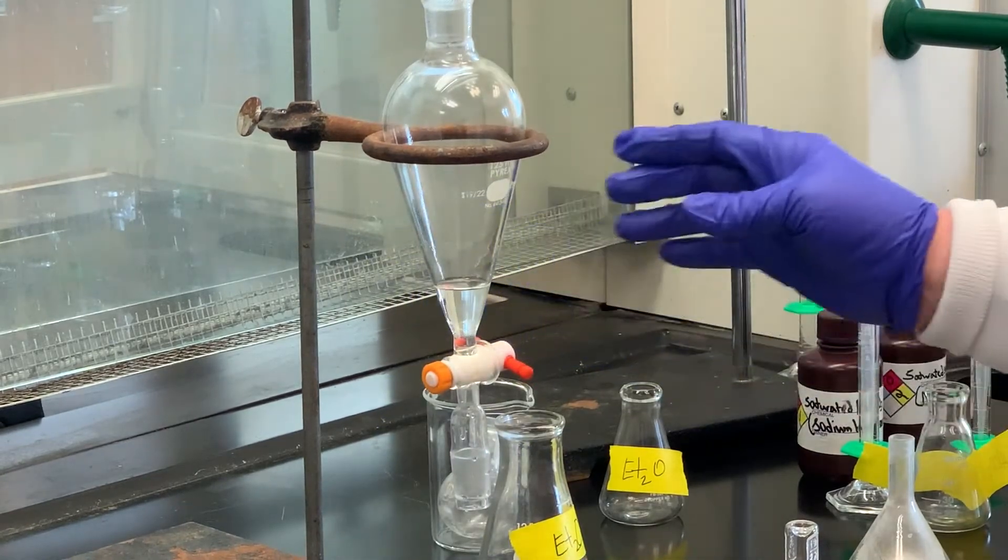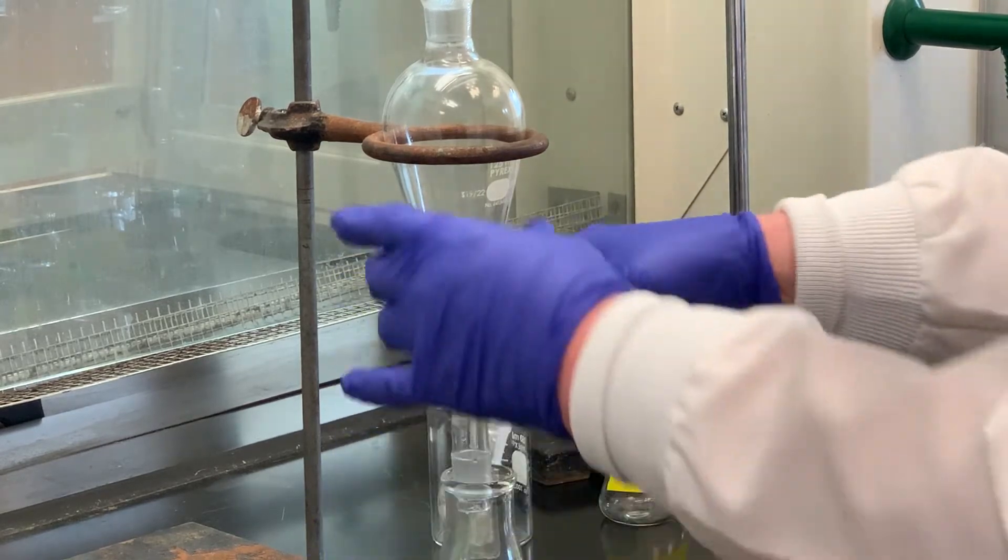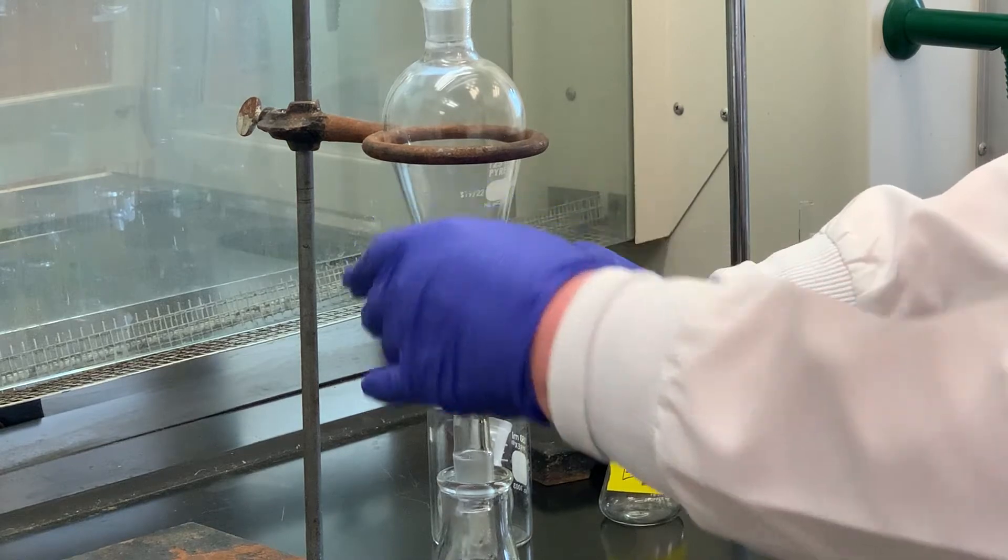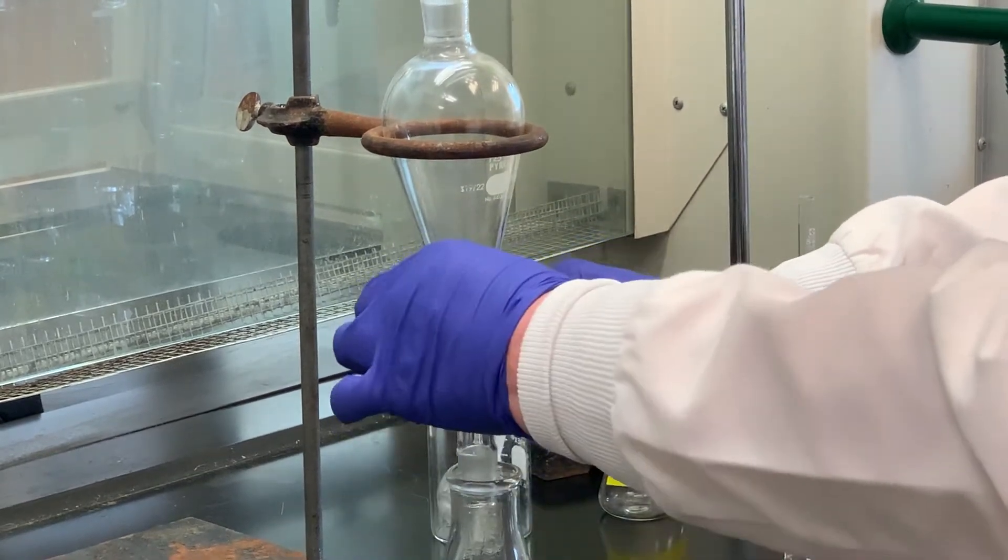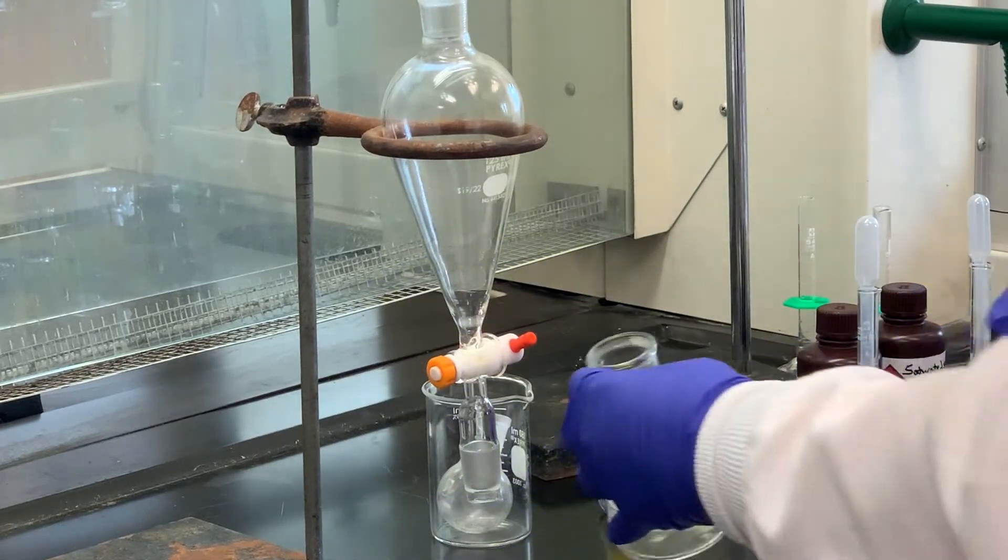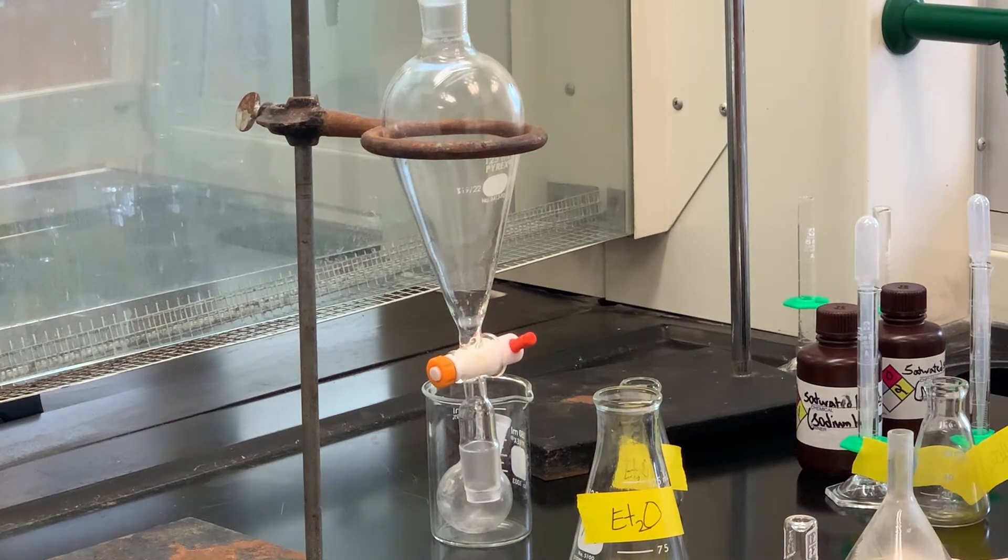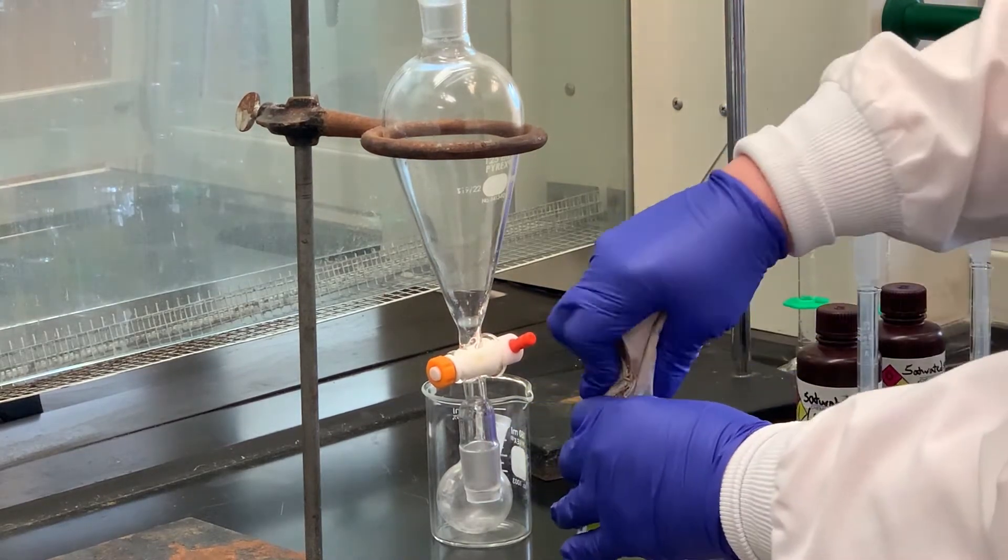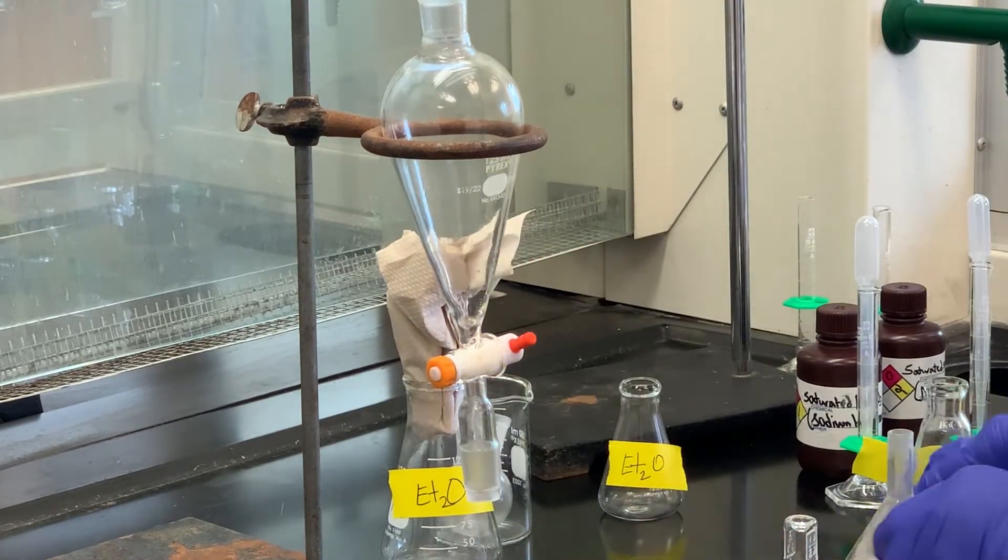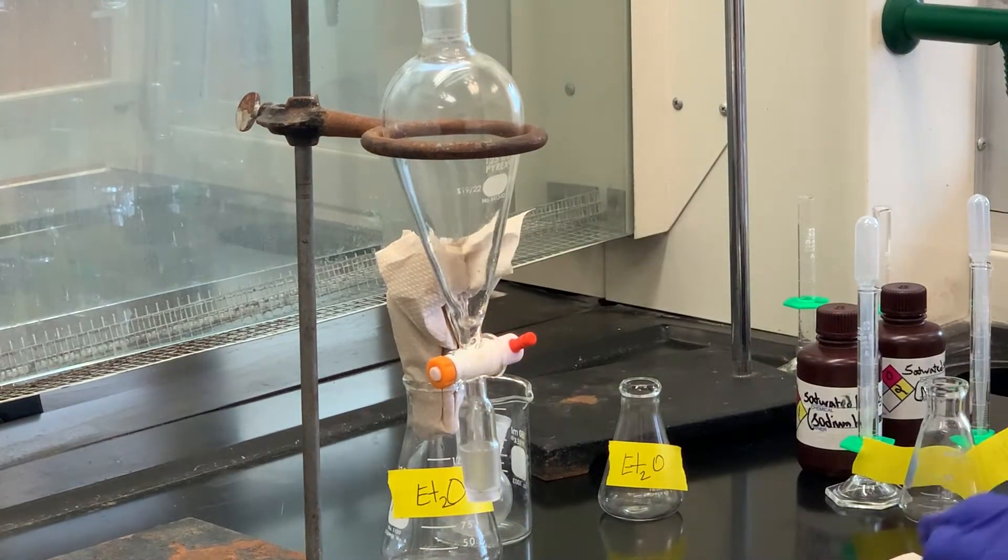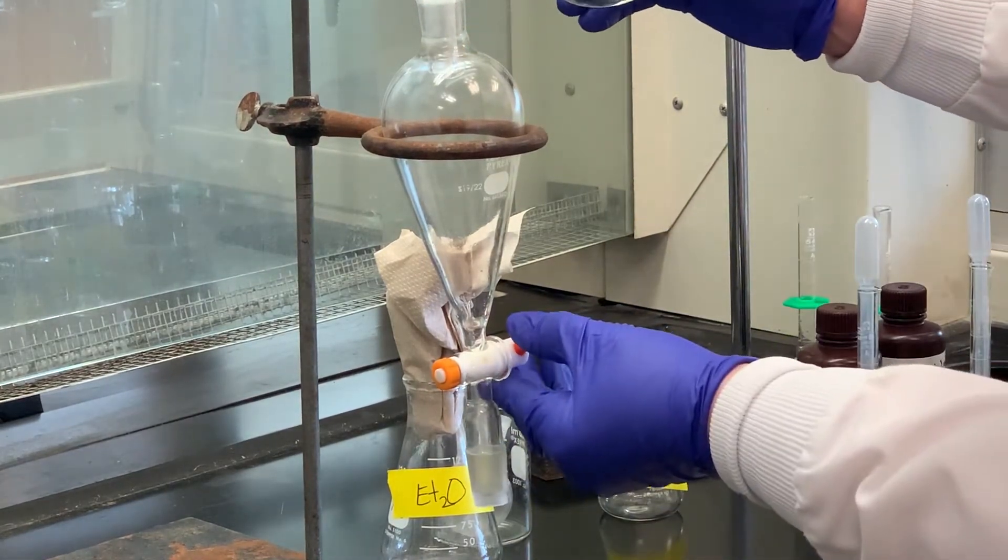So that is our aqueous layer. I've just labeled this the ether. I'm going to combine all my ether extracts at the end. So I'm just going to go ahead and drain this off. And since ether is fairly volatile, it's always a good idea just to stopper that with some paper towel so we're not evaporating everything that we worked so hard to get. So I'm going to pour the aqueous back into the separatory funnel. Stopcock is closed.